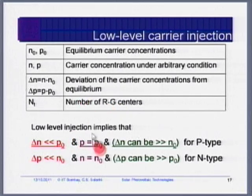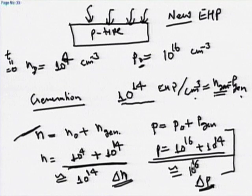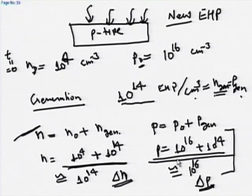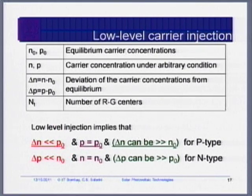Low level injection means that even under illumination, the minority carrier concentration should always be less than majority carrier concentration — p-type remains p-type, n-type remains n-type. If I create 10¹⁸ electron-hole pairs per unit volume in a material with p_0 = 10¹⁶, then both electron and hole concentrations become nearly 10¹⁸, and the semiconductor loses its p-type behavior — that is high level injection. Normally, we operate solar cells under low level injection.